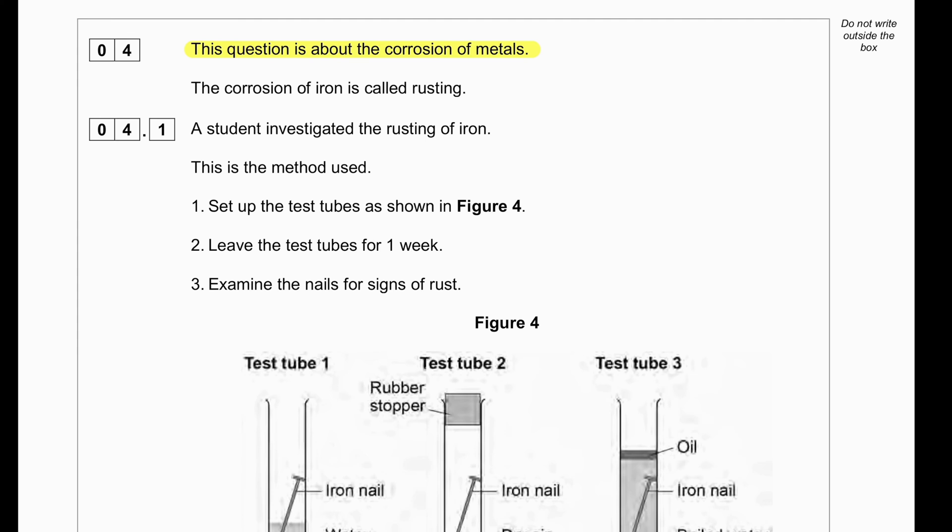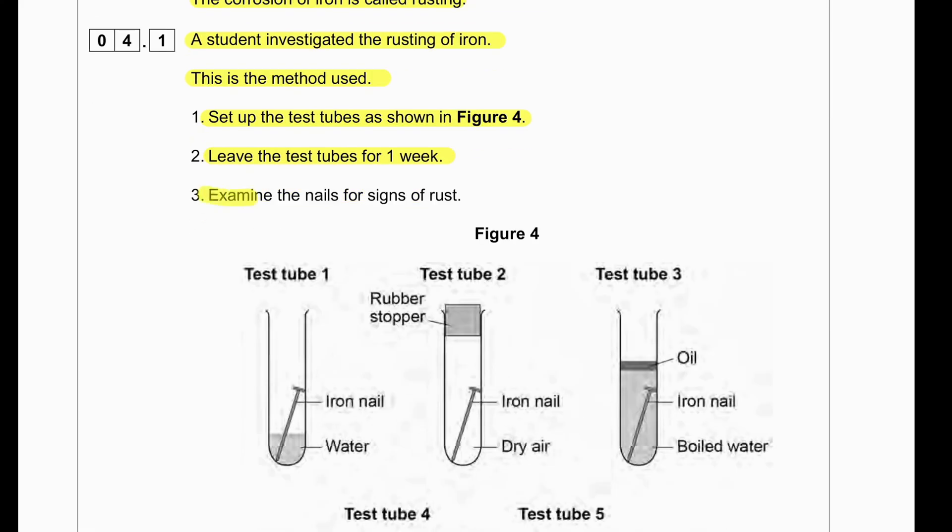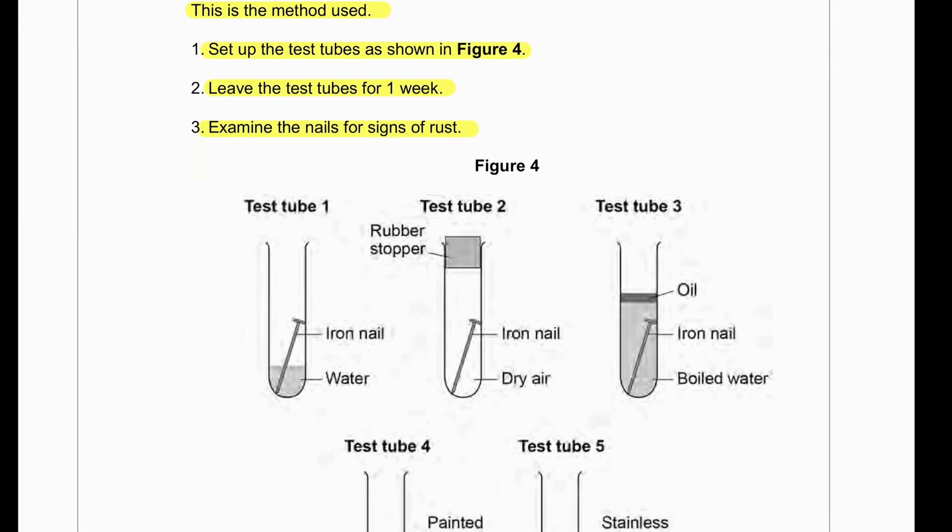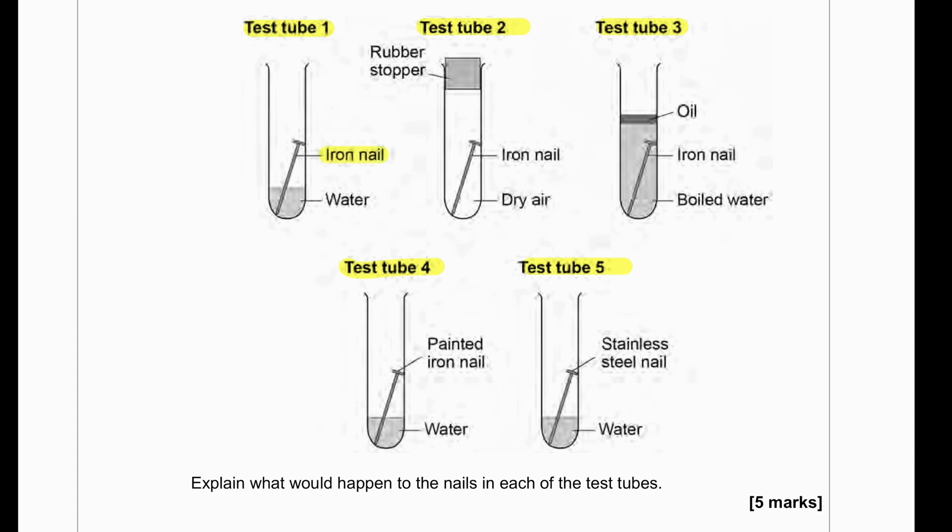This question is about the corrosion of metal. The corrosion of iron is called rusting. A student investigated the rusting of iron. This is the method used. Set up the test tubes as shown in figure 4. Leave the test tubes for one week. Examine the nails for signs of rust. We can see in the test tube one we have iron nailed with water means it's going to rust. So, let's give a tick mark on this. Then we have a rubber stopper with dry air. Since there is no water vapor, this will not rust. So, let's give a cross.